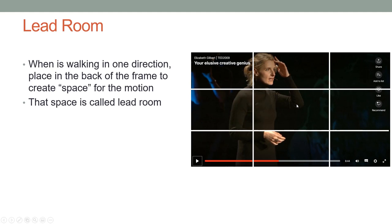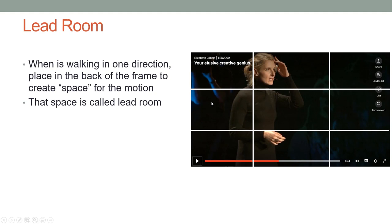Lead room is kind of the same thing. When a person is walking in one direction — in this particular example, Ms. Gilbert is walking this way — you want to try and leave space in the front in the direction that she's walking. From a positioning perspective, you try and place her eyes at the appropriate intersection. But it's very difficult to do when somebody's basically pacing around on stage. You just want to make sure that you get the lead room.